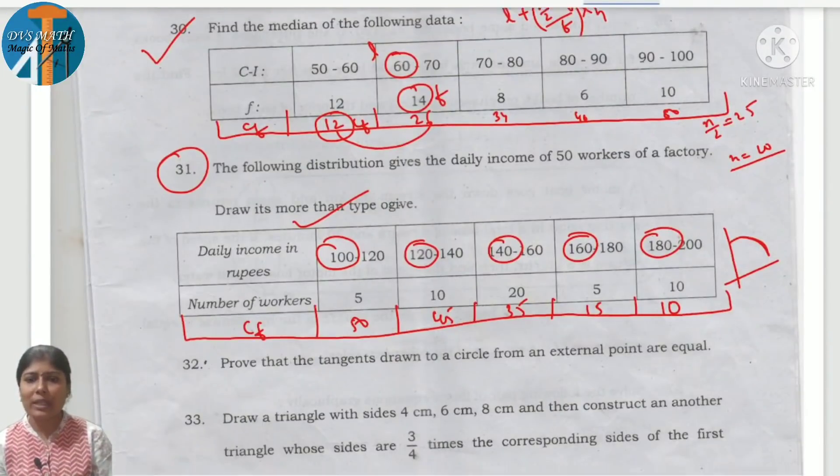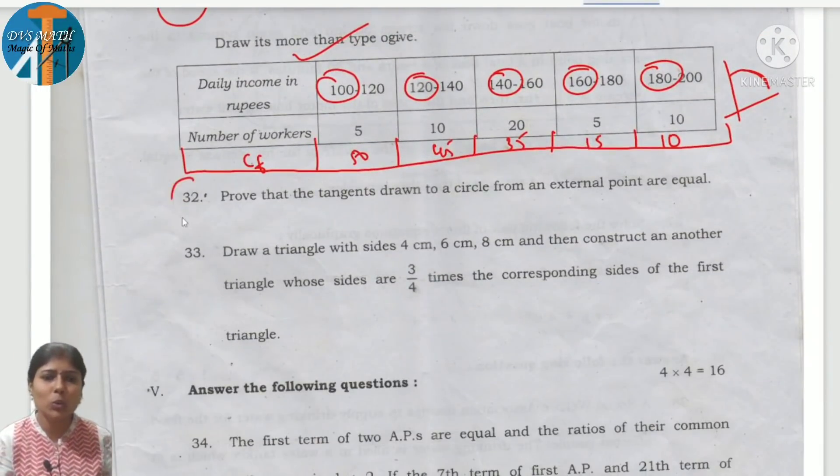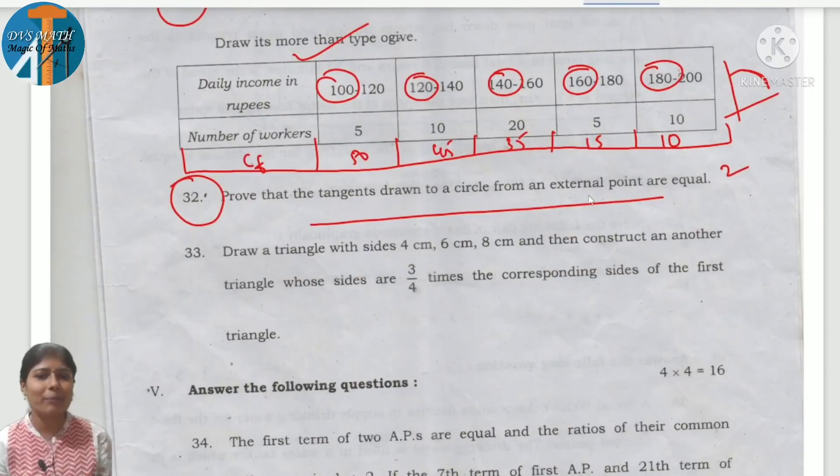32nd question: they are asking for a theorem. Second theorem: prove that the tangents drawn to a circle from an external point are equal. You should practice this. Perpendicular word means first theorem. External point means second theorem.